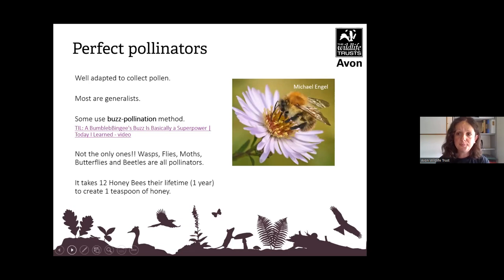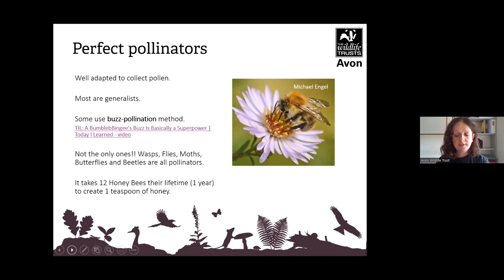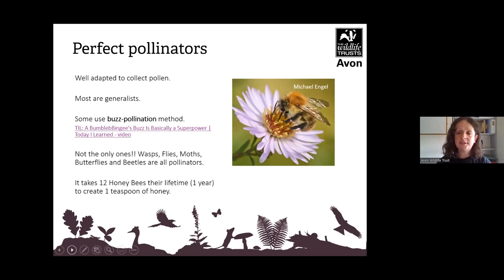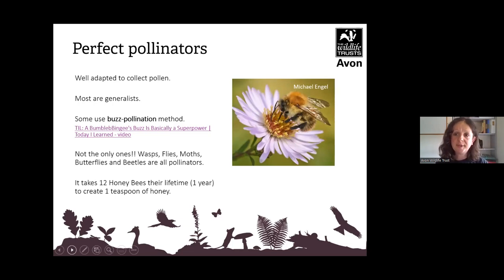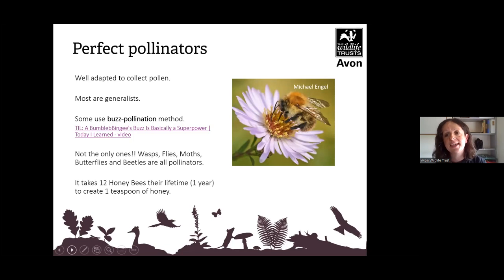Flowers provide bees with pollen and nectar to eat, and by spreading the pollen from flower to flower, some pollen sticks to the bees' legs, meaning that the bees are pollinating each flower. Some bees can see in ultraviolet light, which means they can't see certain colours and generally they focus on yellow and purple flowers — you can see here a carded bee on a purple flower.